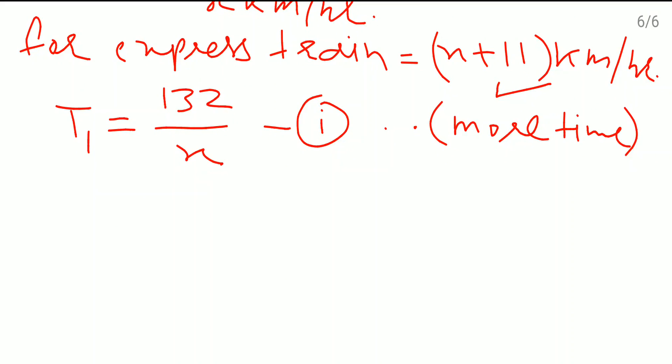Now the time required for the express train, I will say that time as t2 which is equal to 132 by x plus 11. I will name it as equation 2. And this time will be less time, because this is the express train and the speed is more.